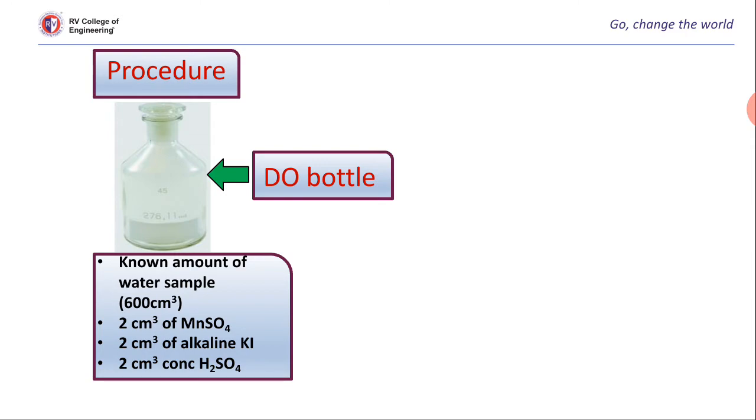Immediately you will get a precipitate like manganese oxyhydroxide. Once the precipitate is settled, you will add 2 cm³ of concentrated sulfuric acid. Once again the bottle is stoppered and the solution is thoroughly agitated till the precipitate dissolves. Immediately iodine liberates.